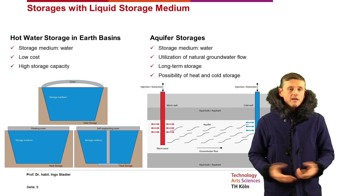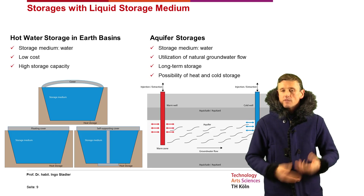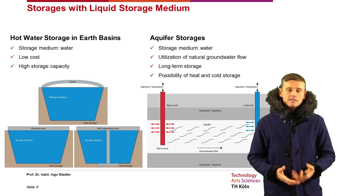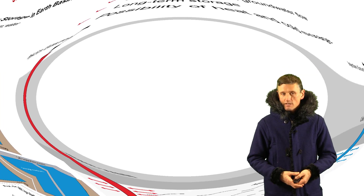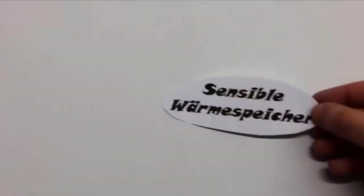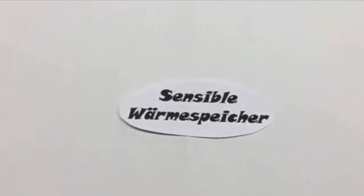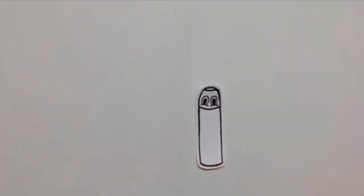To conclude this section, we have a short video that explains the sensible heat storage process. In this video, we are talking about sensible heat energy storage, demonstrated with a small Thermos flask called Fermi. Sensible heat energy storages are a type of thermal energy storage — when their energy content changes, one notices a changed temperature level.